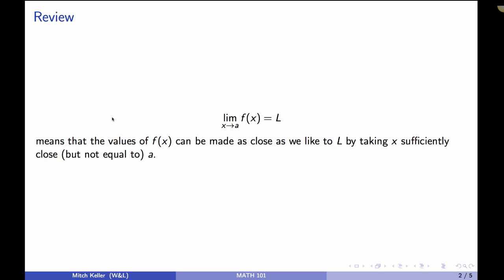We say that the limit as x approaches a of f(x) equals L if f(x) can be made as close as we like to L, L is a real number, by taking x sufficiently close but not equal to the real number a. And this is going to be key because we're going to see in this screencast some examples where taking it exactly equal to a makes the function f undefined.